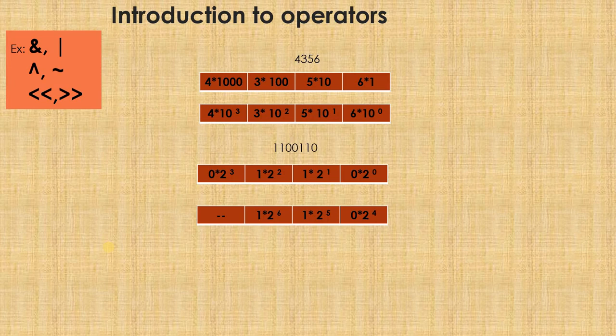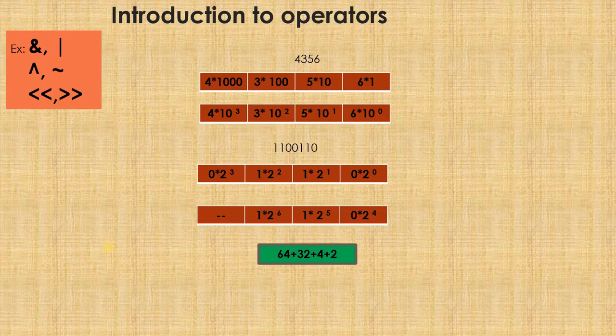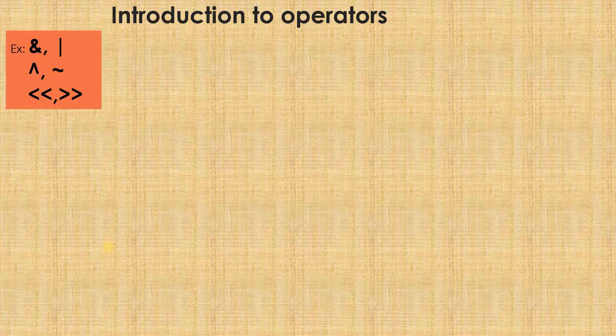So if I want to find the decimal value of this binary number, I will get 64 plus 32 plus 4 plus 2. That will be the decimal equivalent of this binary representation: 1 1 0 0 1 0 1. Having understood this, in the backdrop of all these explanations, let us try understanding the shift operations — specifically left shift and right shift operations.